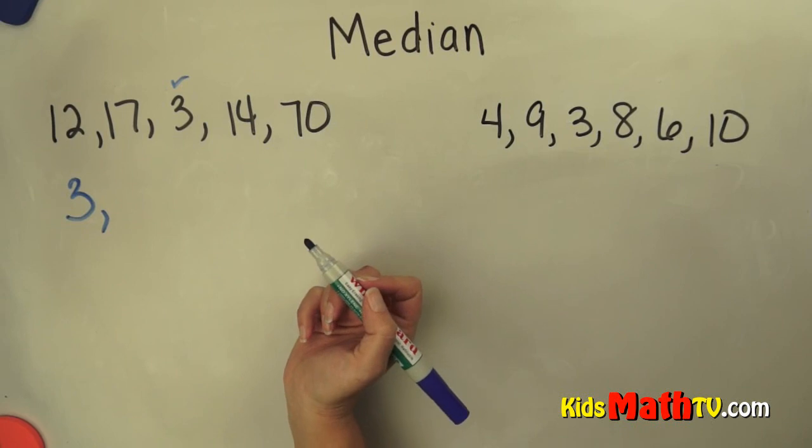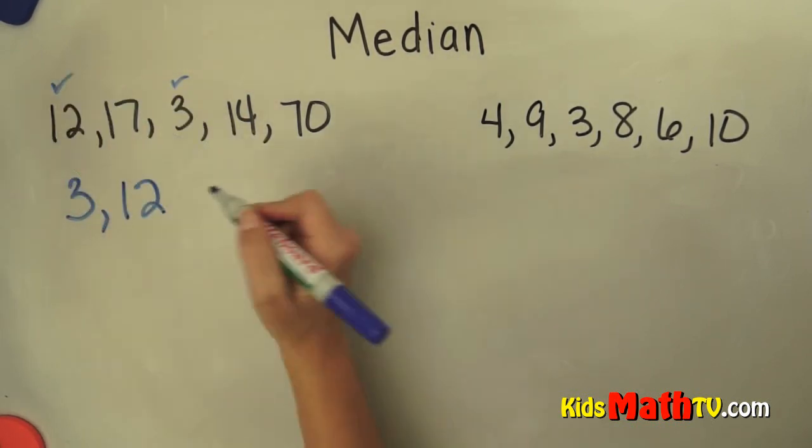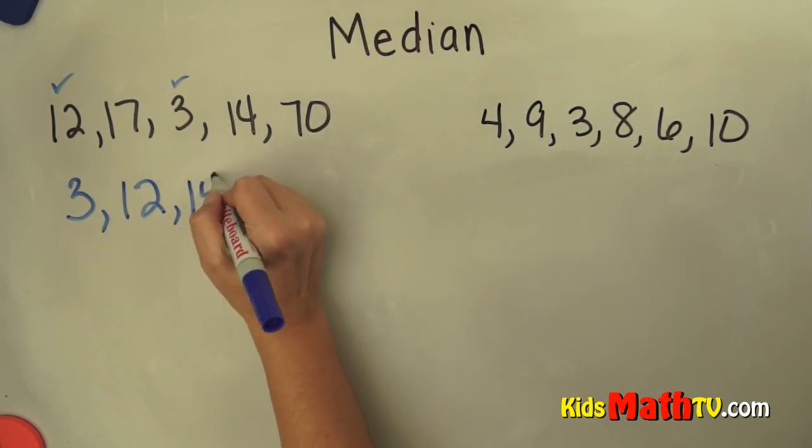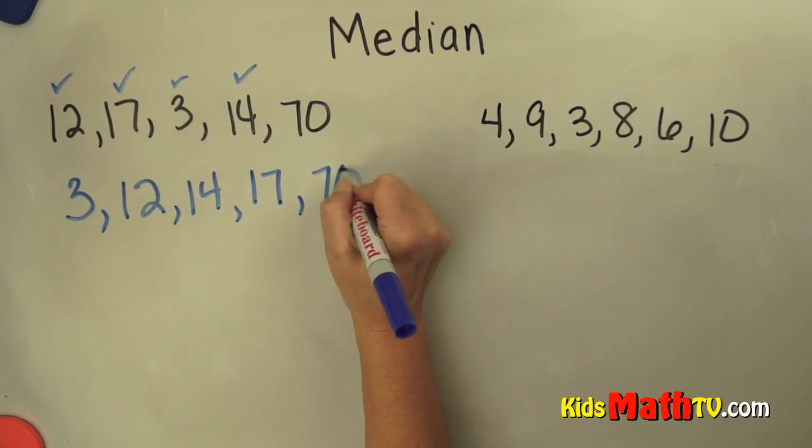So let's see, my next number in order would be 12. Mark that off, and then we have 14, mark that off, 17, mark that off, and 70.